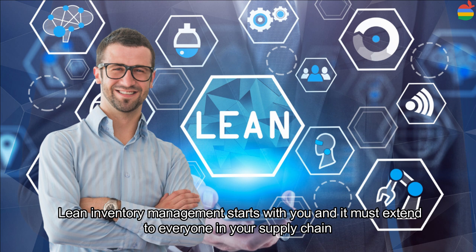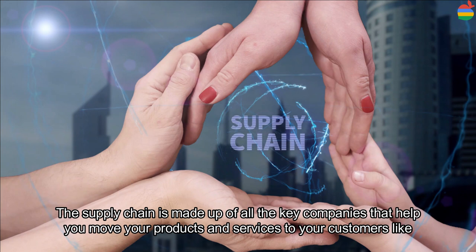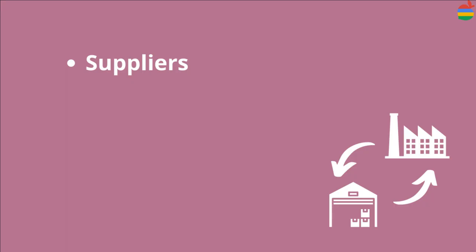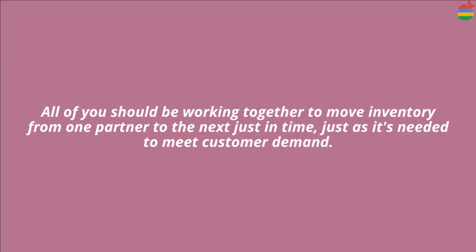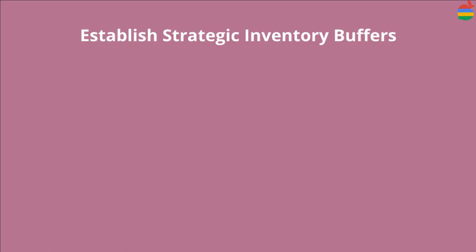Lean inventory management starts with you and it must extend to everybody in your supply chain. The supply chain is made up of all the key companies that help you move your products and services to your customers — like suppliers, distributors, and retailers. All of you should be working together to move inventory from one partner to the next, just in time, just as it is needed to meet customer demand.